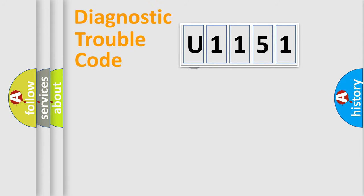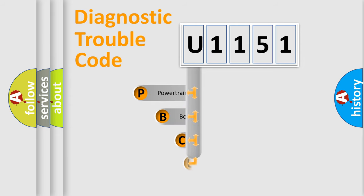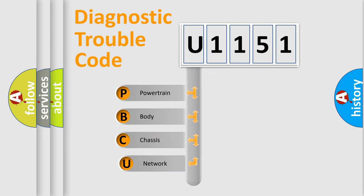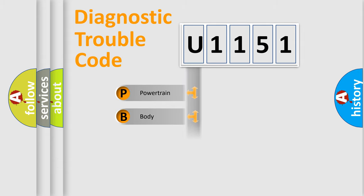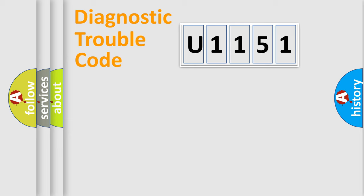First, let's look at the history of diagnostic fault code composition according to the OBD2 protocol, which is unified for all automakers since 2000. We divide the electric system of the automobile into four basic units: Powertrain, Body, Chassis, and Network.